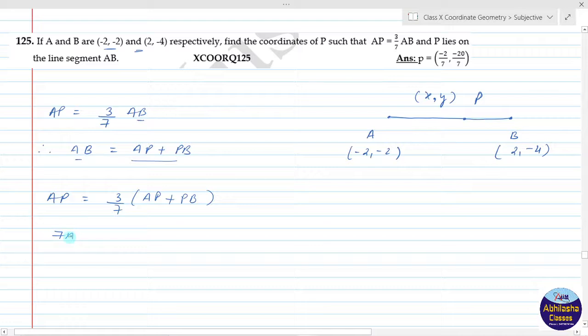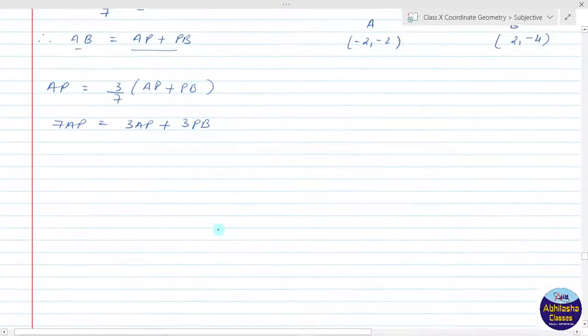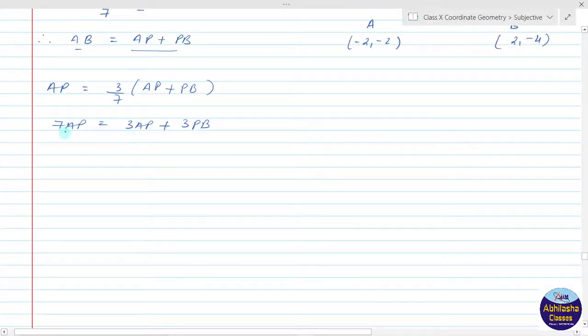Cross multiplying, we get 7AP is equal to 3AP plus 3PB.